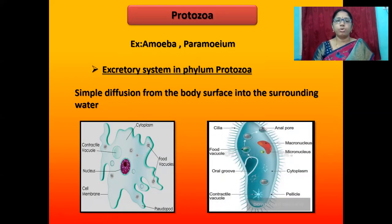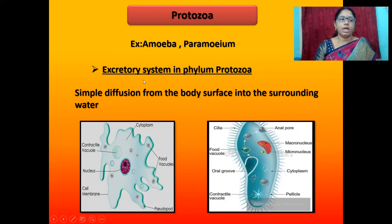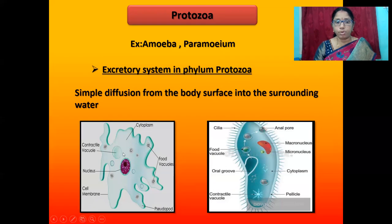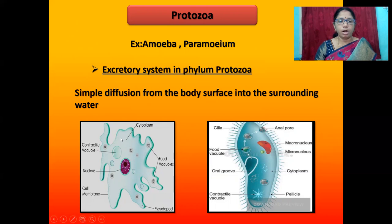The first phylum is Protozoa. Examples include amoeba and paramecium. The excretory system in phylum Protozoa involves simple diffusion from the body surface into the surrounding water. Respiration happens within the cytoplasm of amoeba: oxygen is consumed, carbon dioxide is formed in the cytoplasm, and the carbon dioxide exits by simple diffusion.